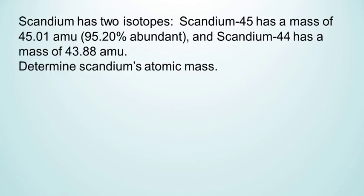This time, with scandium. Scandium has two isotopes. Scandium-45 has a mass of 45.01 atomic mass units, 95.20% abundant. And scandium-44 has a mass of 43.88 atomic mass units. Determine scandium's atomic mass. Once again, we're going to do the problem the same way. But you might notice that it seems like there's some missing information here. We know the percentage abundance of one of the isotopes. But we don't know the percentage abundance of the other isotope. So if we know that an element has two isotopes and we know one of the percents, can we determine the other percentage?